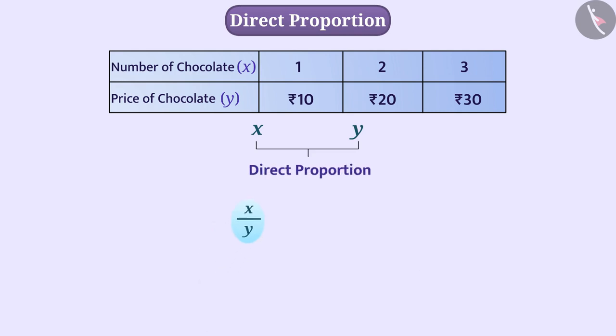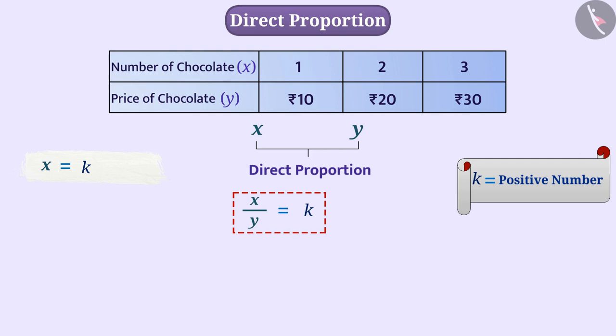In such case, x by y is constant. Let's consider this as k where k is a positive number. We can say x is k multiplied by y.